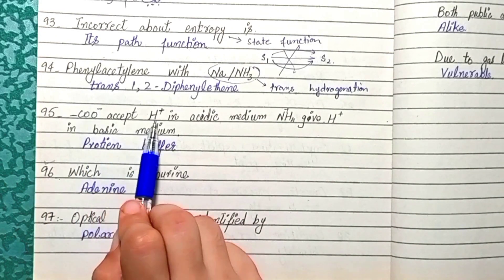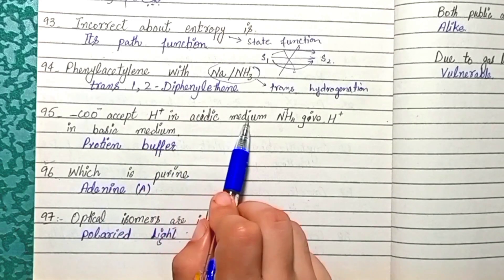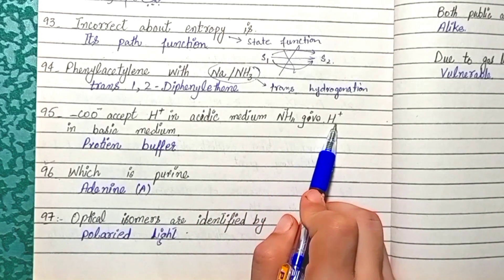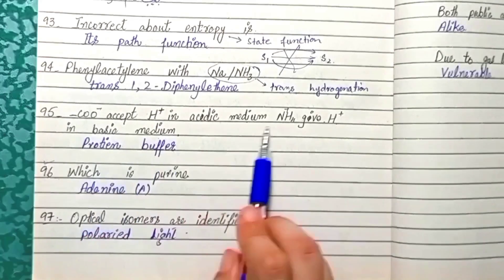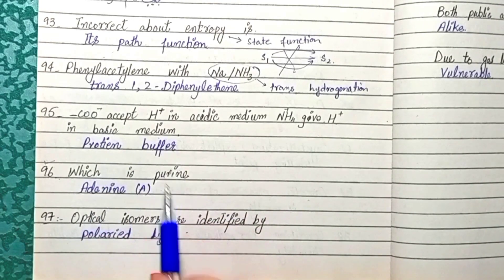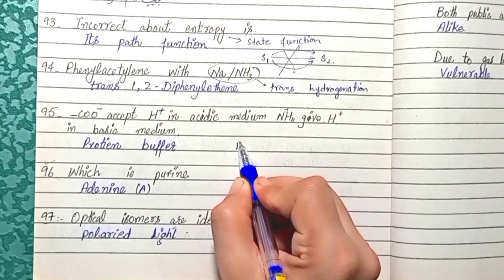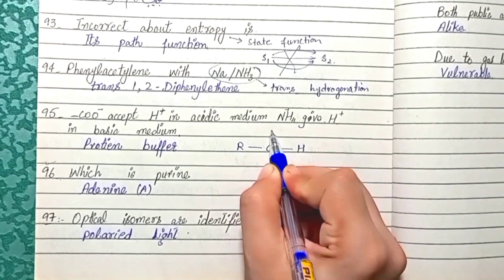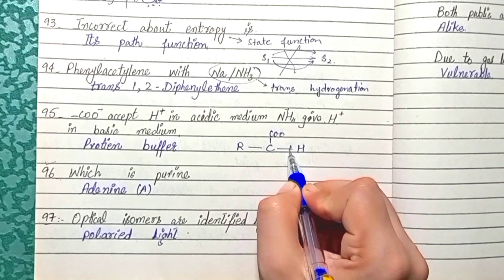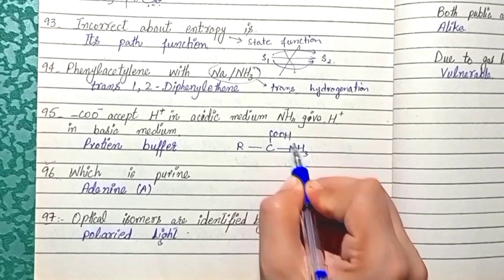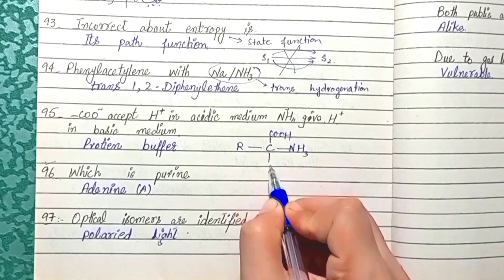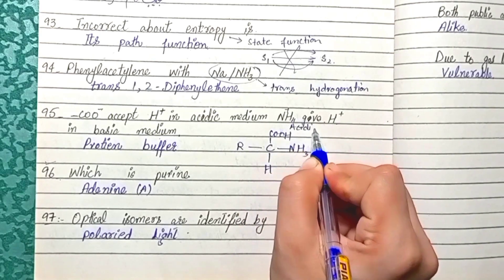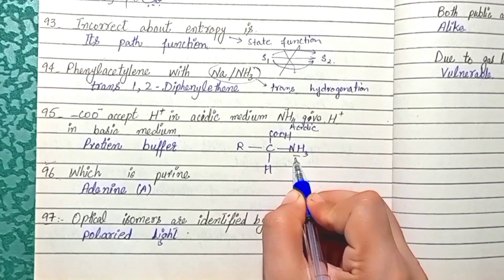Question 95: Amino acids have a carboxylate group that donates H+ in acidic medium and an amino group that donates H+ in basic medium. This dual nature allows them to act as protein buffers. The carboxylate group is acidic and the amino group is basic.